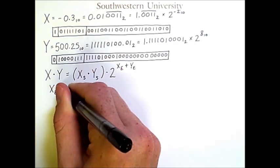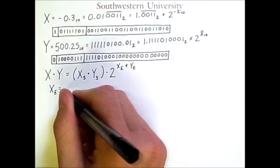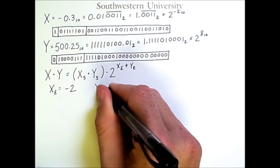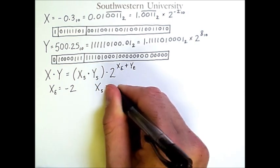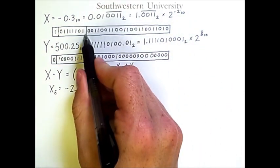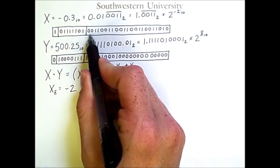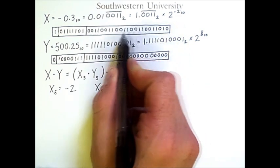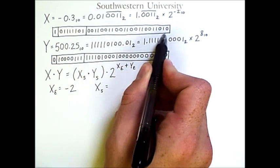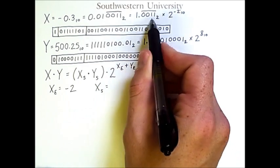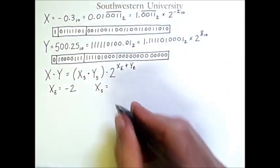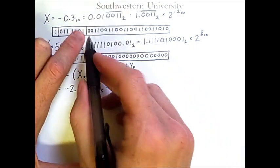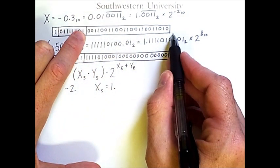The exponent for x is simply minus 2. And the significand for x is one point followed by this sequence. Note that in this operation we will use the rounded floating point value and not the actual repeating value. So we will have one point and then I will put in these specific bits here.